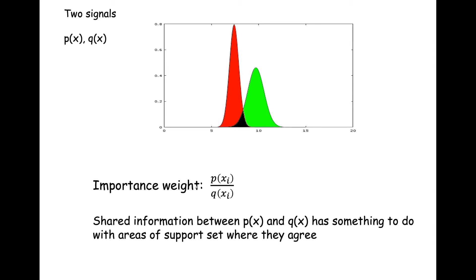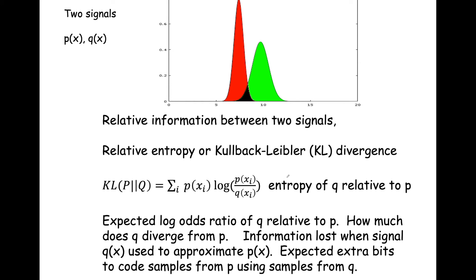Shared information between P and Q has something to do with those regions of the support set where they agree. If we look at two distributions — say the red distribution is P and the green one is Q — we notice an overlap region. This ratio is going to be larger for this shared region on areas of support where they agree. The more they agree, the more important that particular locus within the support set.